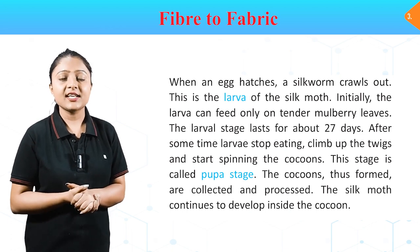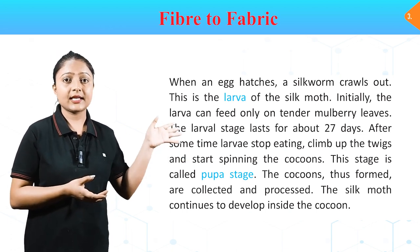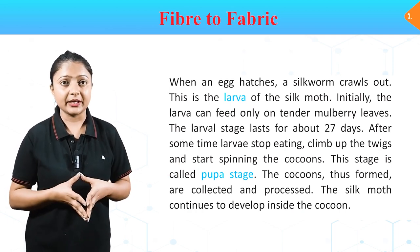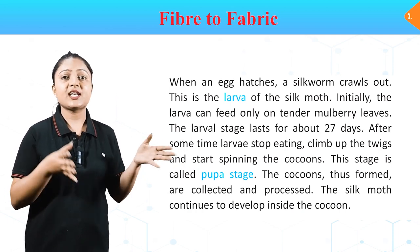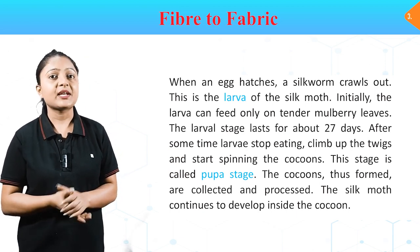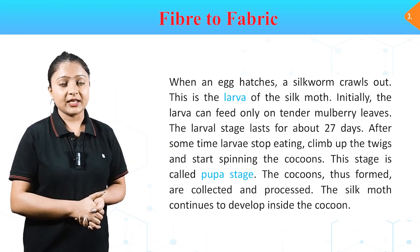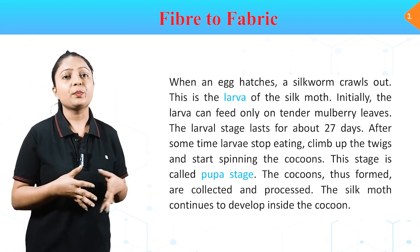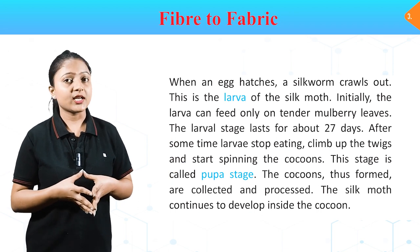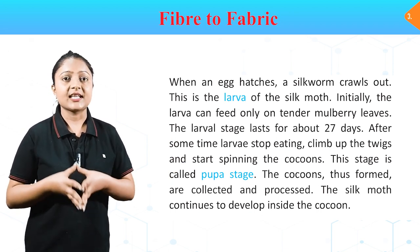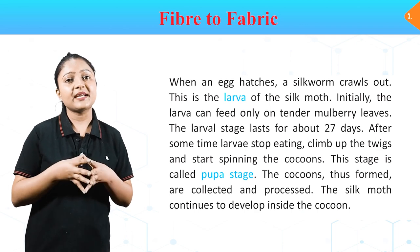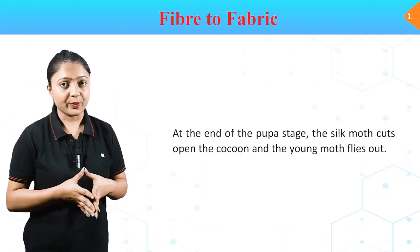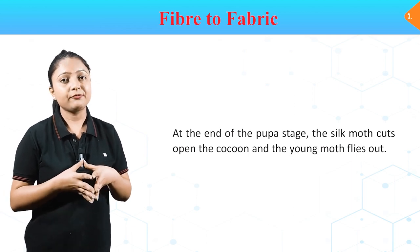Life cycle of the moth: when an egg hatches, a silkworm crawls out — this is the larva of the silk moth. Initially the larva feeds only on tender mulberry leaves. The larva stage lasts about 27 days. After some time larvae stop eating, climb up twigs and start spinning cocoons — this stage is called the pupa stage. The cocoons formed are collected and processed. The silk moth continues to develop inside the cocoon, and at the end of the pupa stage it cuts open the cocoon and the young moth flies out.